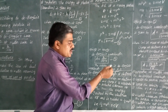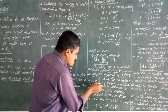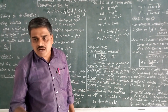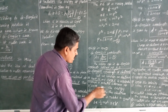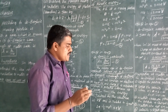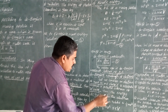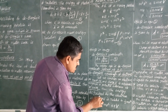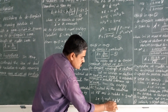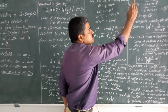Next topic is De Broglie wavelength of electrons. Let us consider an electron of mass m and charge e, accelerated through a potential difference of V volts. The energy acquired by the electron is eV, and this is related to kinetic energy: half mv squared is equal to eV, where capital V is the potential.